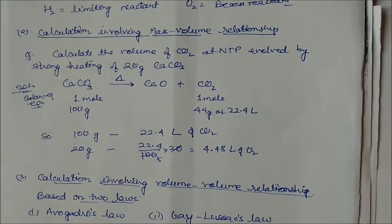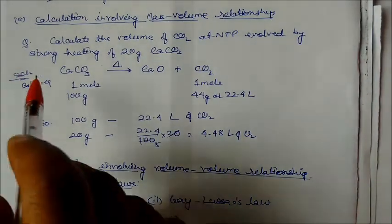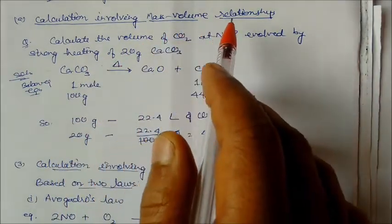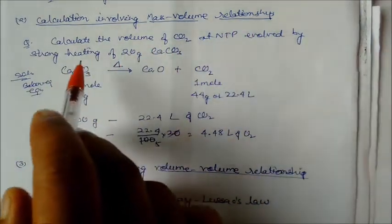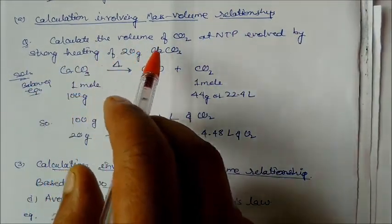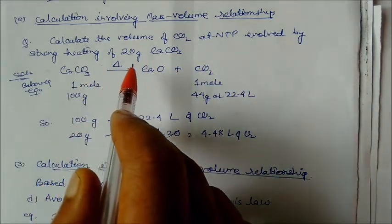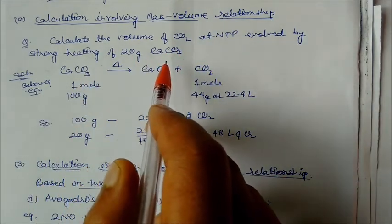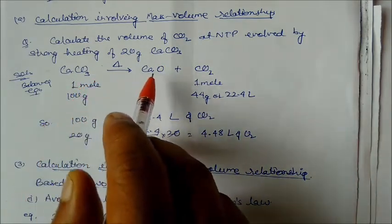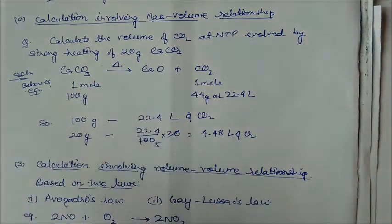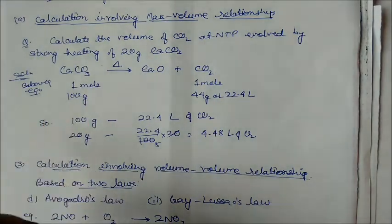This type of problem often comes in examinations, so it is very important to understand limiting reagent. Next is calculation involving mass-volume relationships. Example: calculate the volume of CO₂ at NTP evolved by strongly heating 20 grams of calcium carbonate.